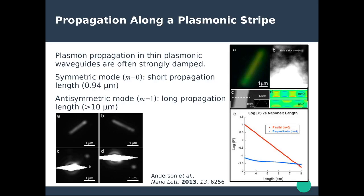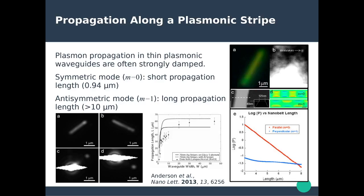Similarly to the previous experiments, you can shine light on one end or place a quantum emitter and observe propagation and re-emission of light on the other end of the nanowire. Importantly, you can increase the propagation length by increasing the width of the stripe — from around 10 microns up to maybe 60 microns — but at some point you saturate and cannot further increase due to the inherent loss of the metal.